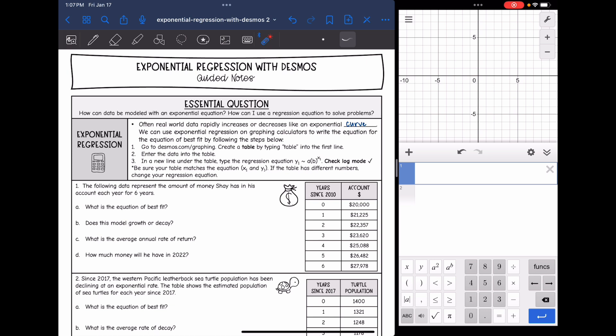So often real world data rapidly increases or decreases like an exponential curve. So we can use exponential regression on graphing calculators to write the equation of best fit by following the steps below.